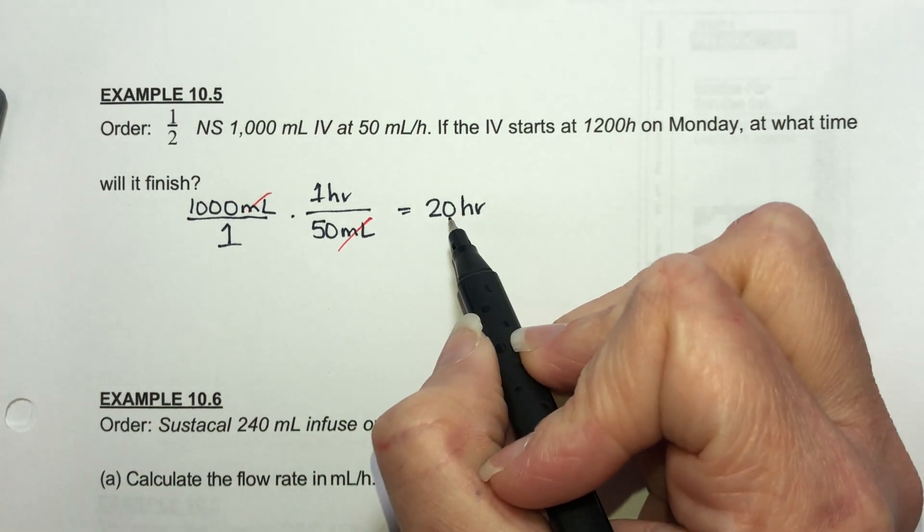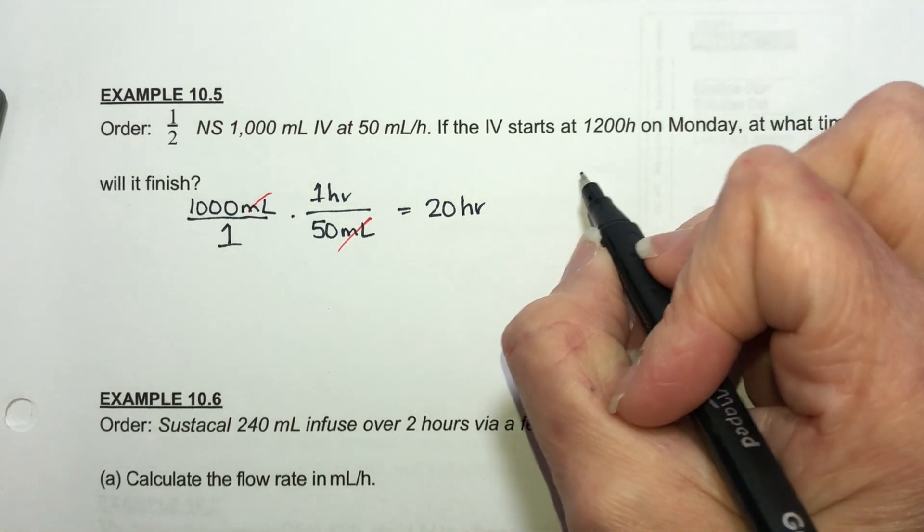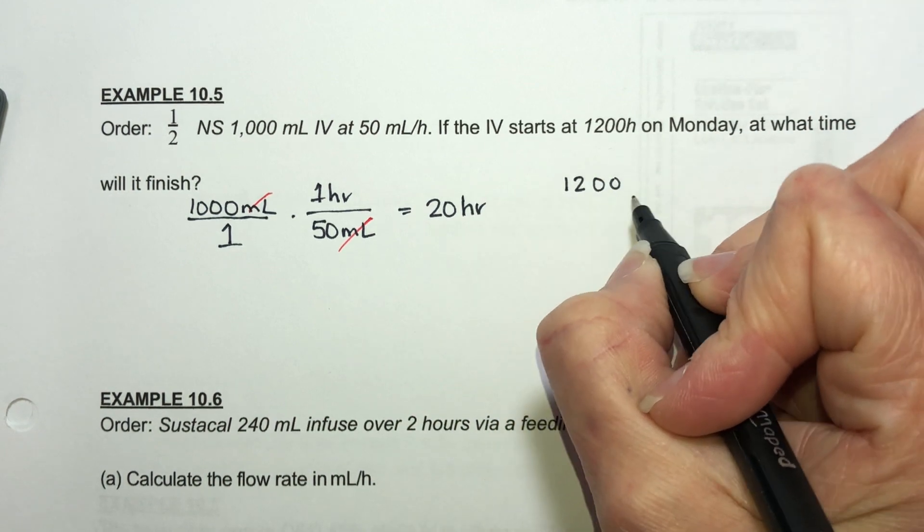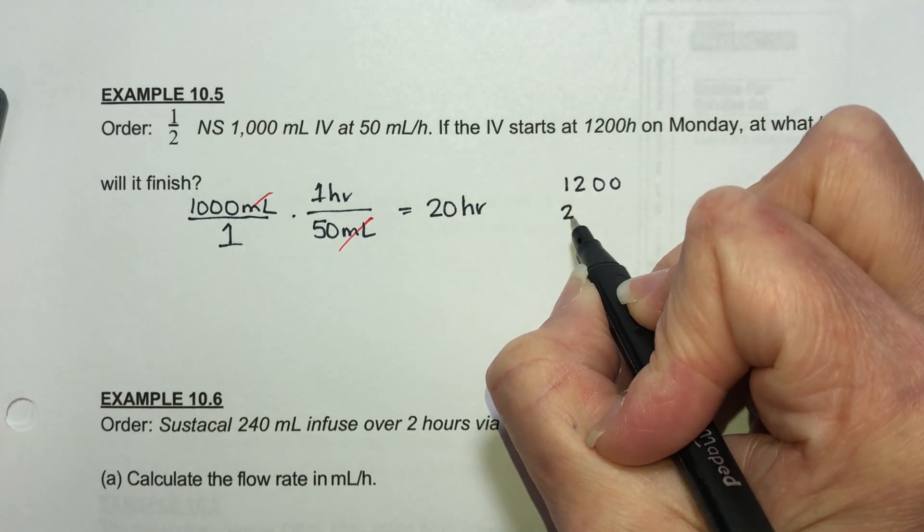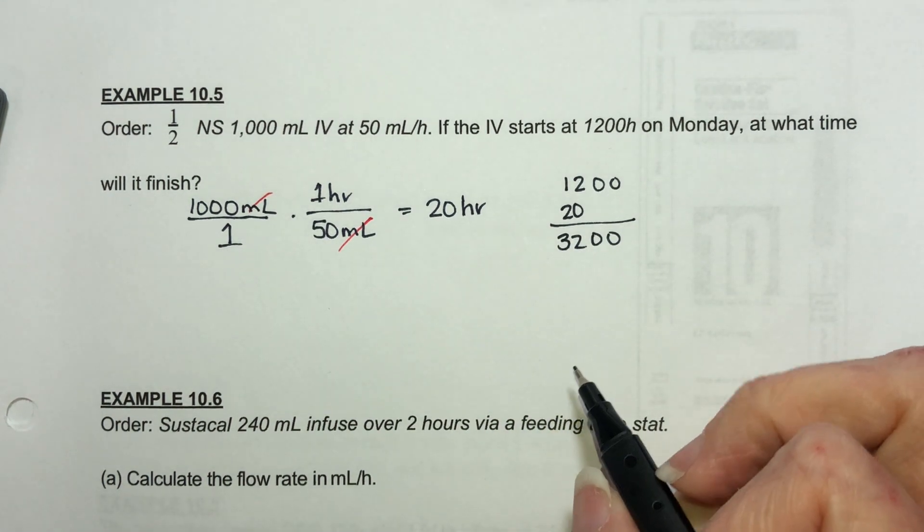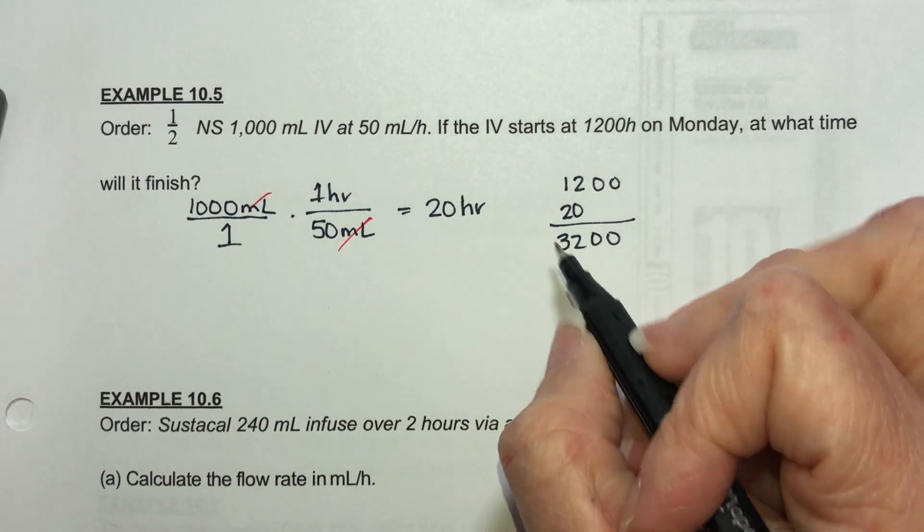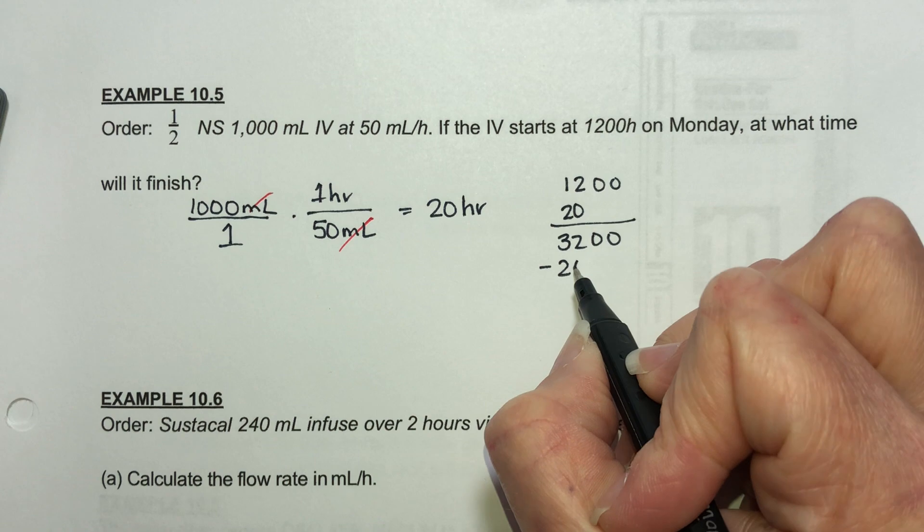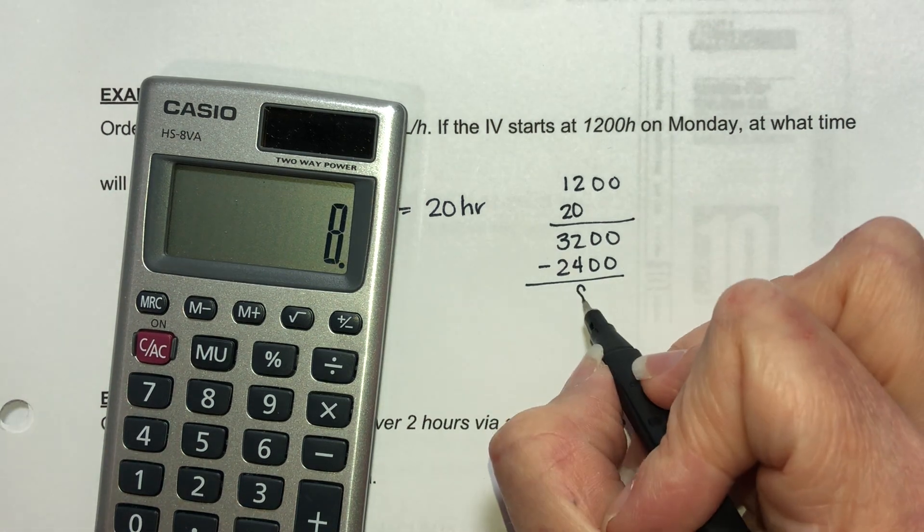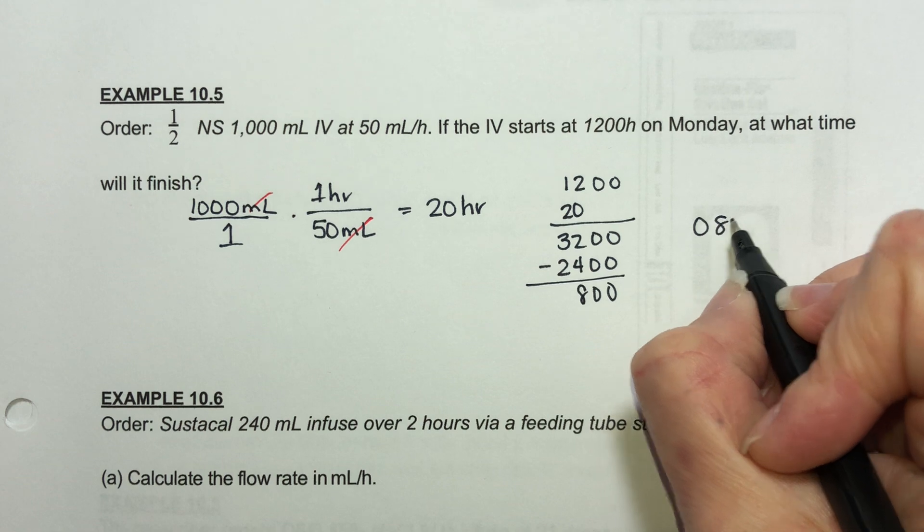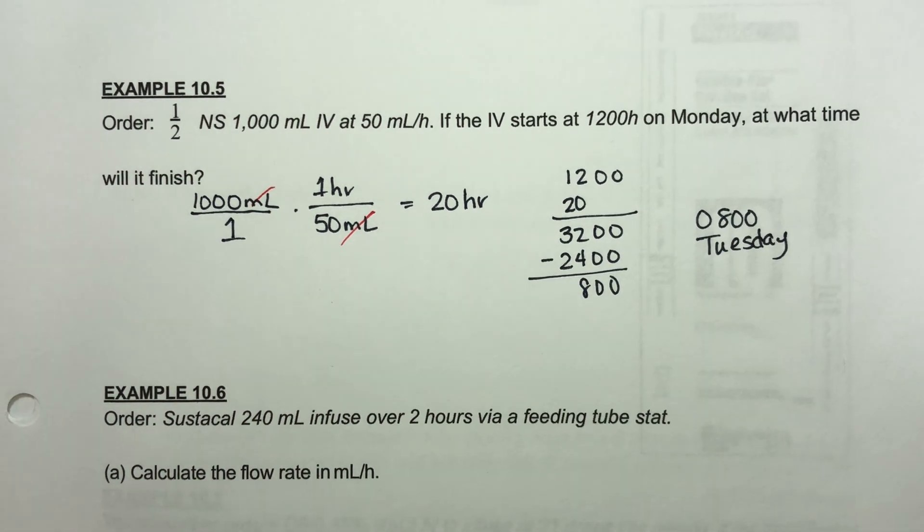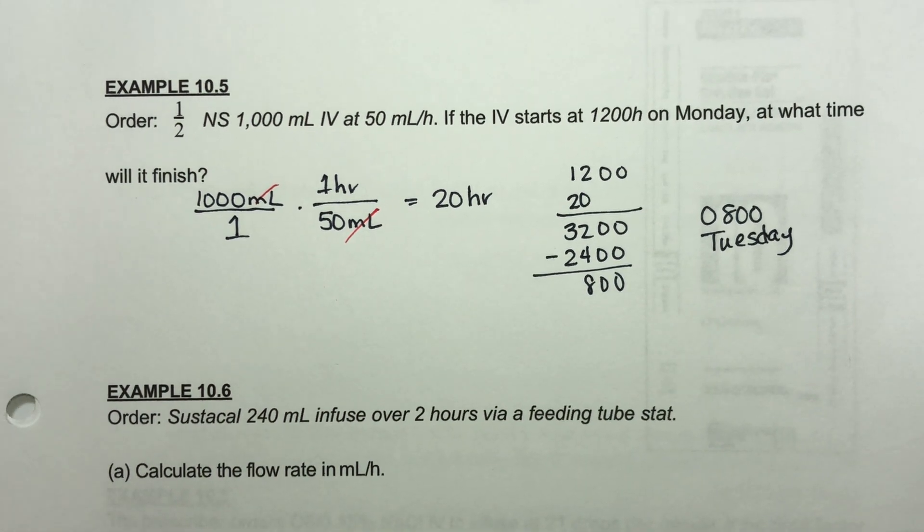So when what's 20 hours after noon on Monday? Well the easy way to do that is this is 1200 hours. We're going to add 20 hours to it. Remember these two are essentially your minutes. The first two are your hours. So if I take 20 and add to that I get 3200. Now we know there are only 24 hours in a day so we're actually being bumped over to the next day. So we're in Tuesday now. Let's subtract the 24 hours to see where we end up. 32 minus 24 is 8. So this will finish up at 0800 hours Tuesday. Or you could always count on your fingers at 20 hours to noon and see where you get.